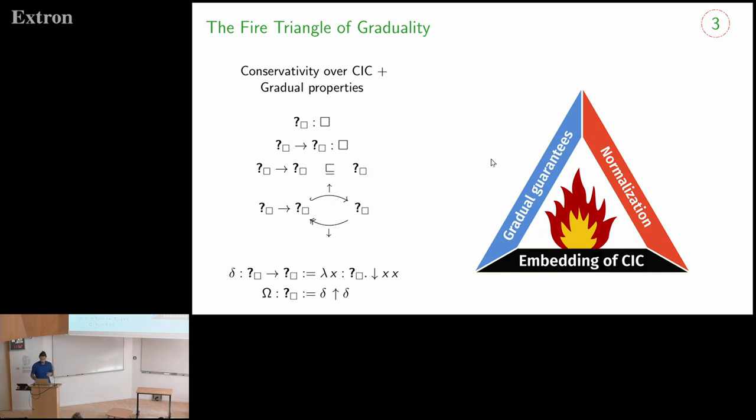So what can we do about that? Well, we can actually try to get the best of at least two of the three sides of this triangle. And that's what we did in previous work. First, restricting the function types and getting this version, which is called CIC shift. Having a version which is not normalizing, which is on the bottom right corner. And on the left, I have a version which embeds CIC, which has normalization, but which is not gradual, which does not respect the gradual properties such as I was showing you.